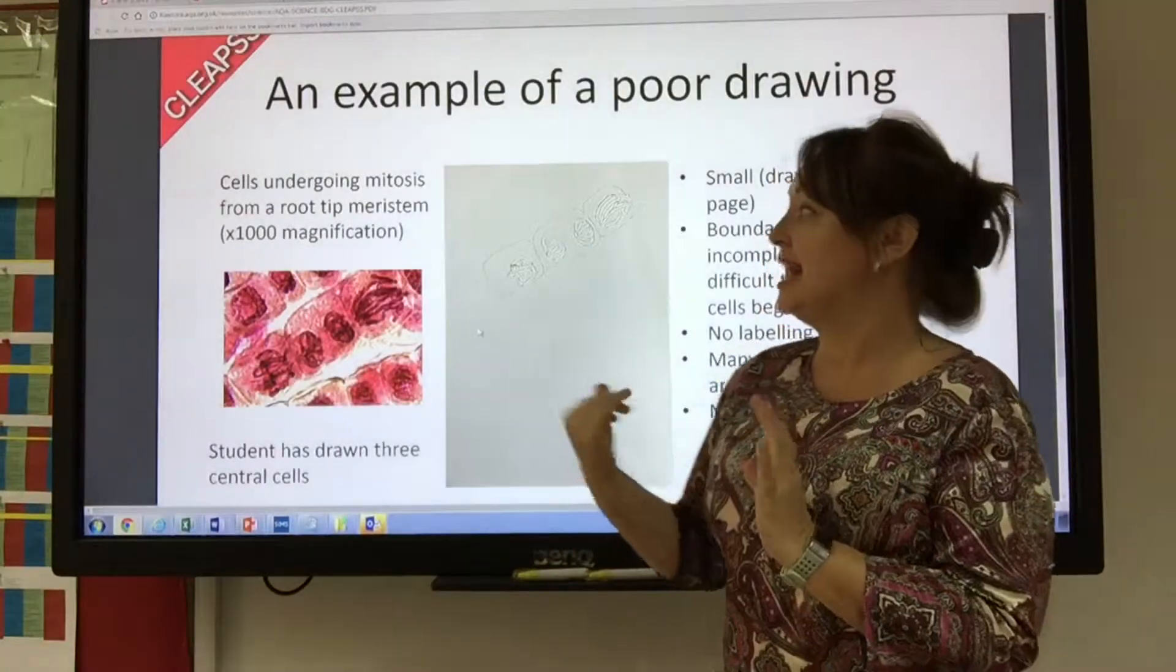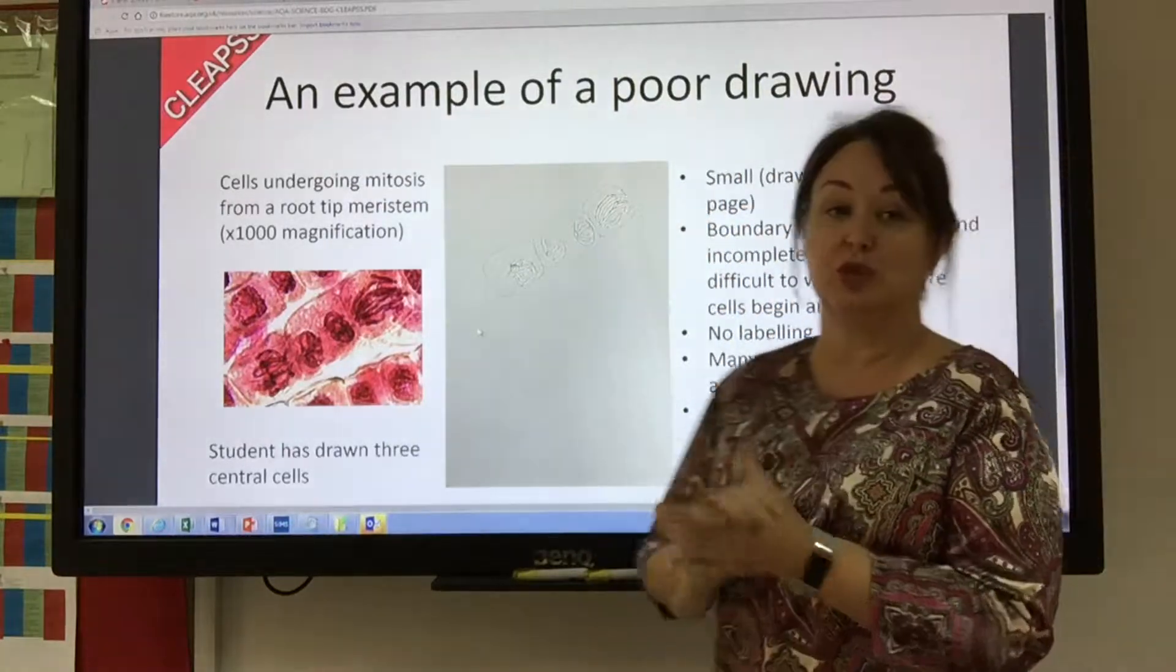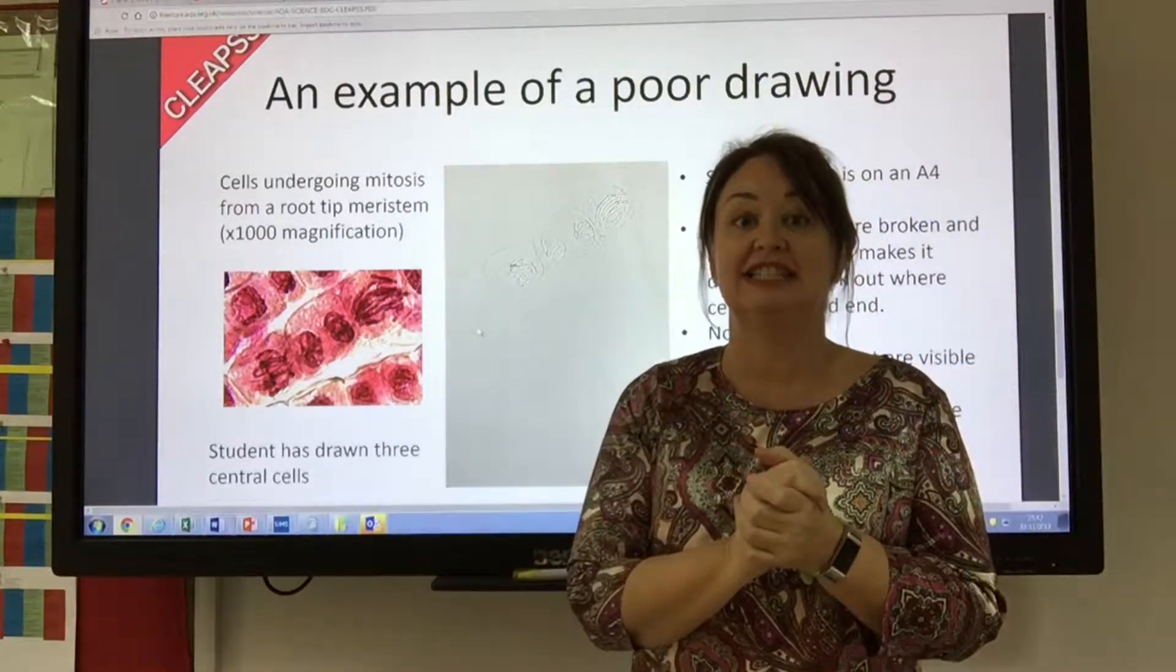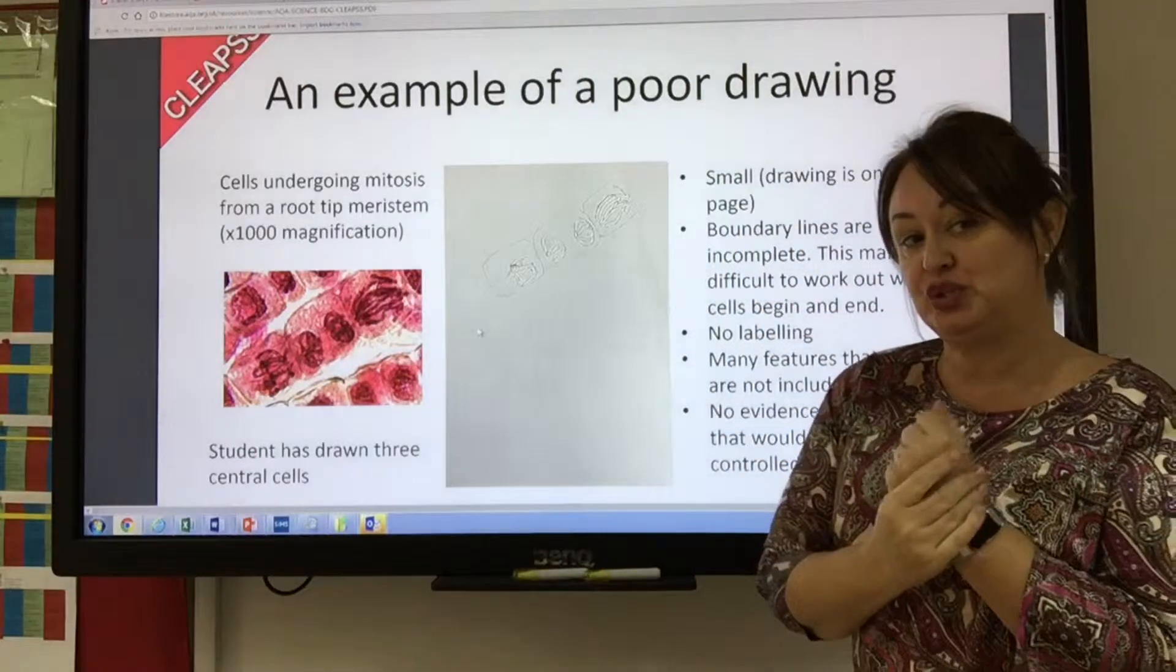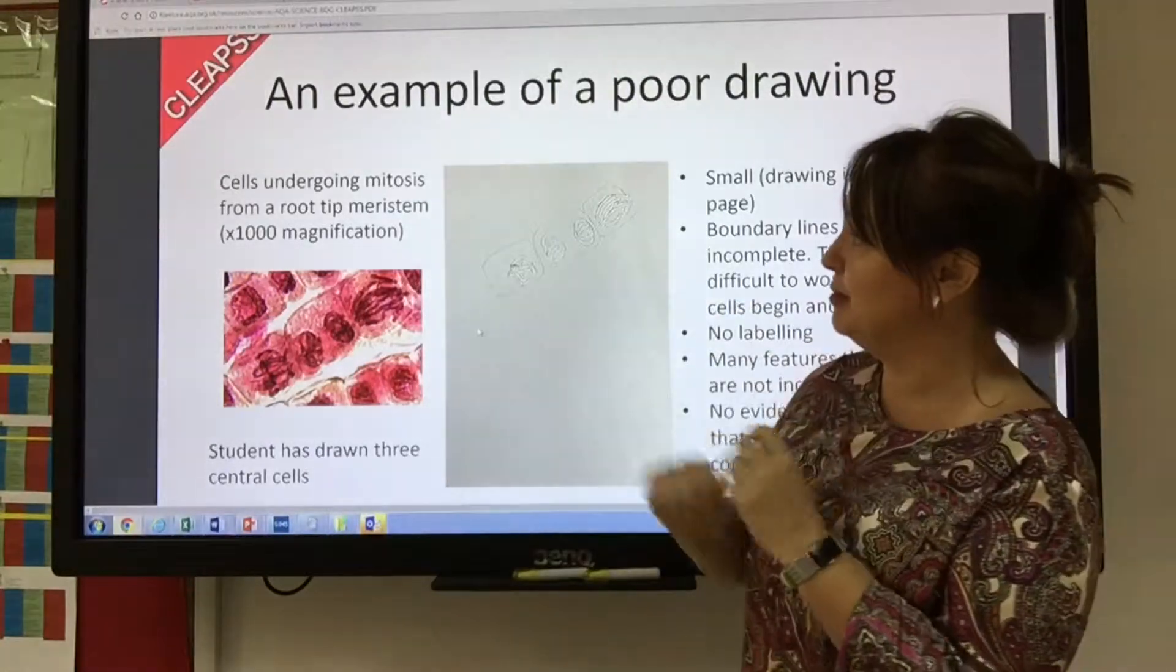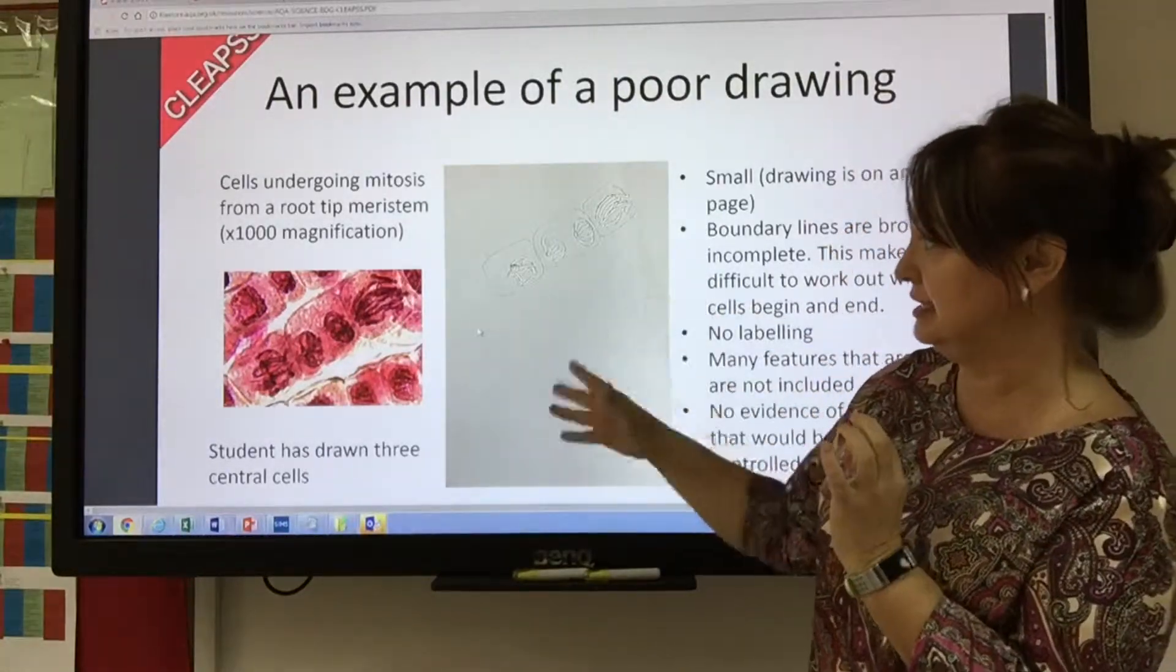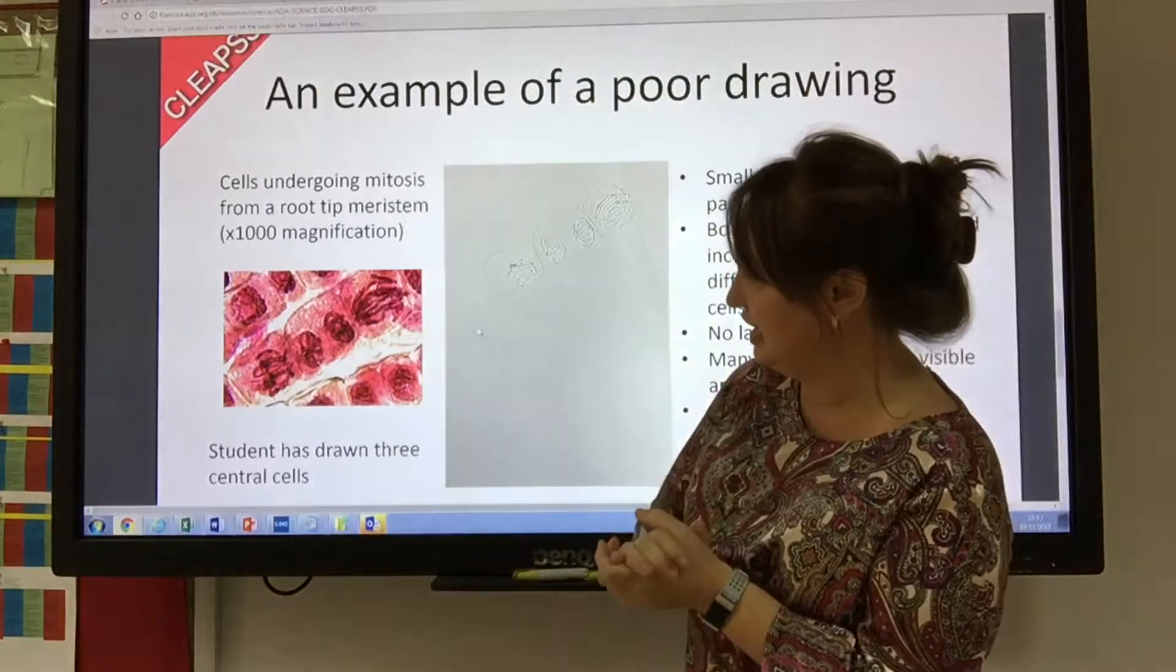This slide is provided by Cleats and it tells us what's not really ideal about this biological drawing. It relates to the quad practical too, and shows cells undergoing mitosis from a root tip meristem at a thousand times magnification.